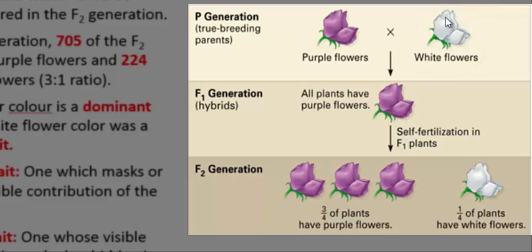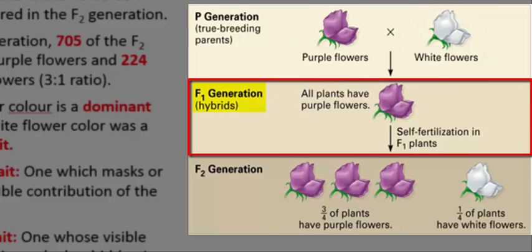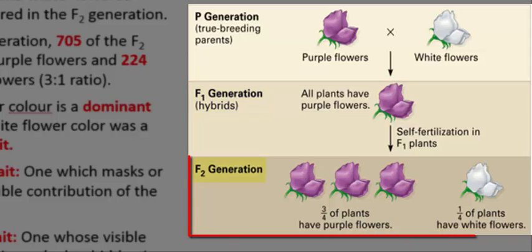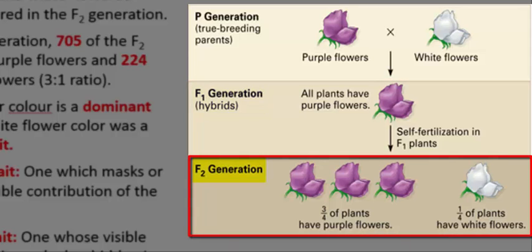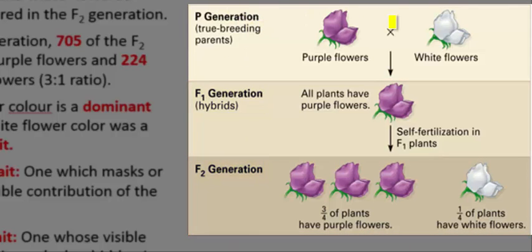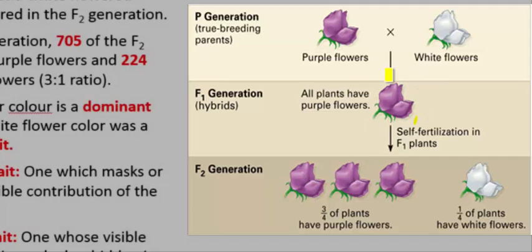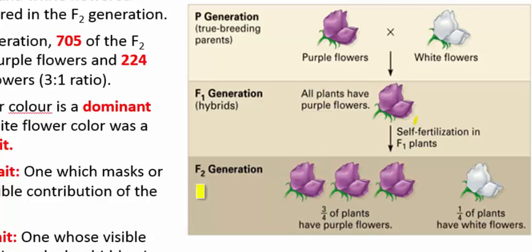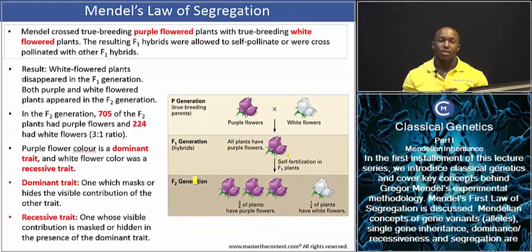The resulting F1 generation — the first filial generation — were then allowed to self-pollinate or cross-pollinate to produce the second filial generation. So the parental generation had pure lines, the purple and the white. They were bred or crossed to form the F1 generation, and the F1 generation was self-pollinated or cross-pollinated to form the F2 generation.